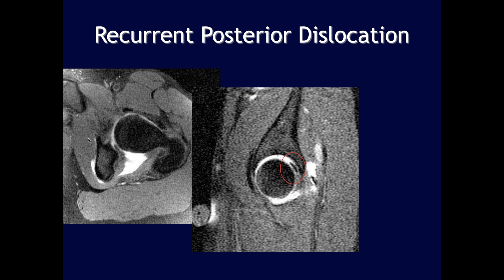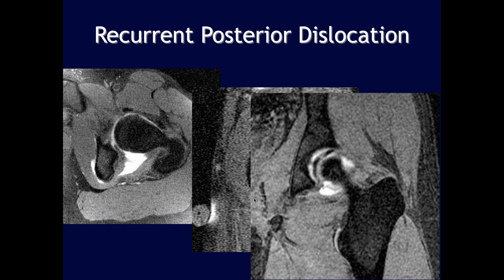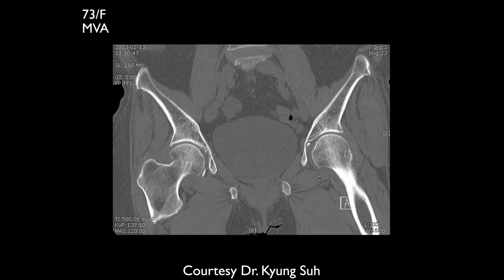Regarding the capsule posteriorly, there is no well-defined capsule, though there is some contrast. On the sagittal image, low signal intensity material on the posterior superior joint is identified — possibly displaced periosteum, displaced labrum, or a fracture. It appears to be a chronic fracture.